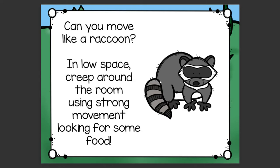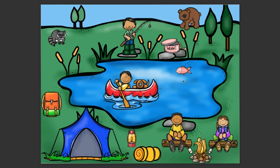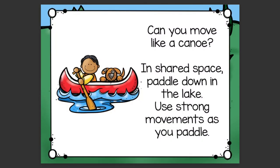Let's try another character in our dance and freeze. How about this little boy in the canoe? Can you move like a canoe? In shared space, paddle down the lake. Use strong movements as you paddle. Shared space means you're moving with somebody else, just like this little boy is canoeing with his dog.